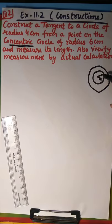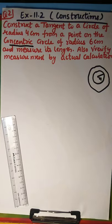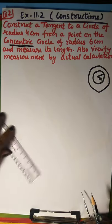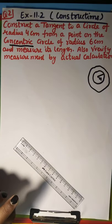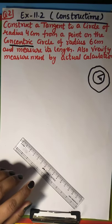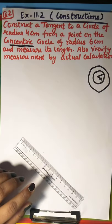So first of all you have to do, you have to do 4 cm circle, then 6 cm circle. So take your compass, scale, pencil and draw the circle of 4 cm and 6 cm. Okay? Go ahead and draw.